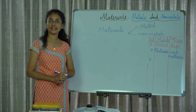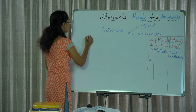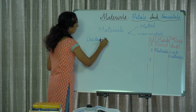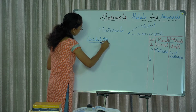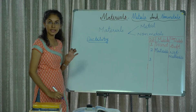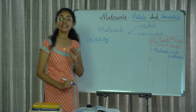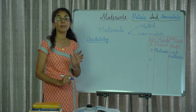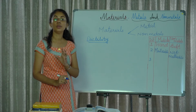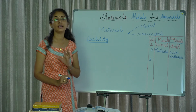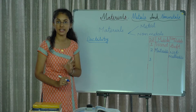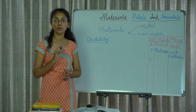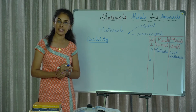The next property of metals is ductility. Ductility means the metals can be drawn into thin wires. The property of metals by which they can be drawn into thin wires is called ductility, and metals which have this property are called ductile.